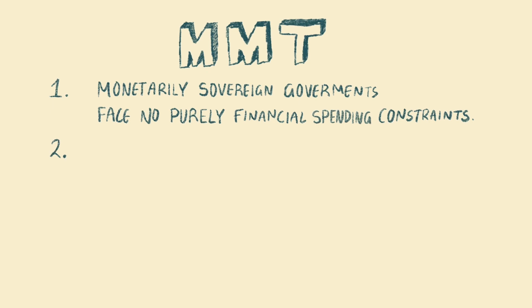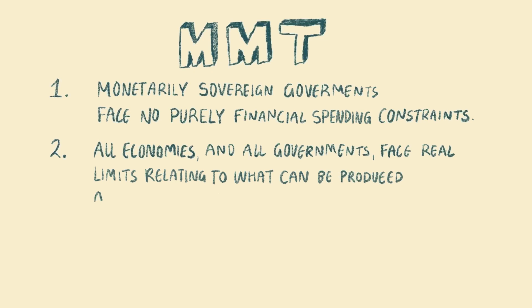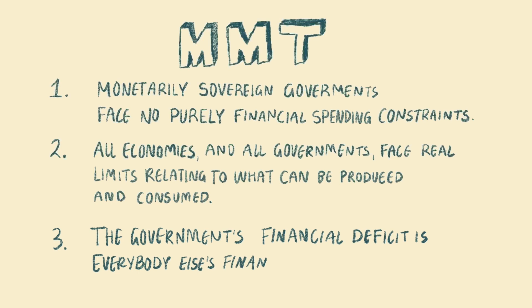One: monetarily sovereign governments face no purely financial spending constraints. Two: all economies and all governments face real limits relating to what can be produced and consumed. Three: the government's financial deficit is everyone else's financial surplus.